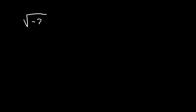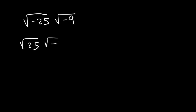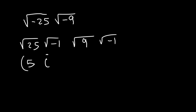What's the square root of negative 25 times the square root of negative 9? The square root of negative 25 is the square root of 25 times the square root of negative 1. The square root of negative 9 is the square root of 9 times negative 1. The square root of 25 is 5, and the square root of negative 1 is i. The square root of 9 is 3, giving us 3i.